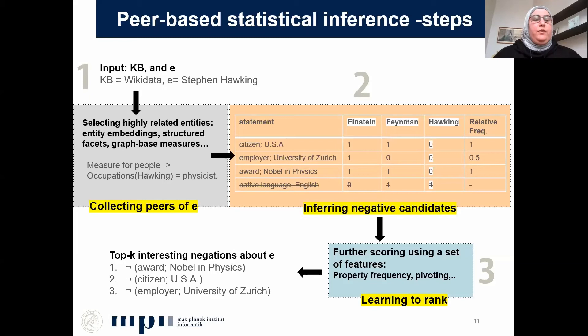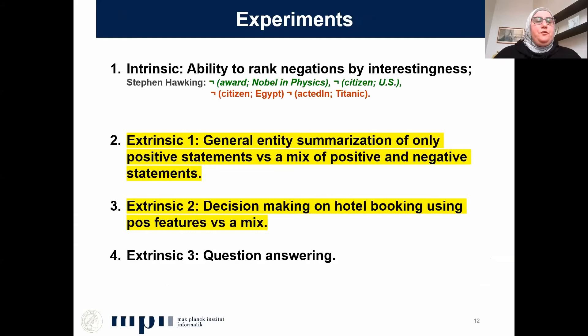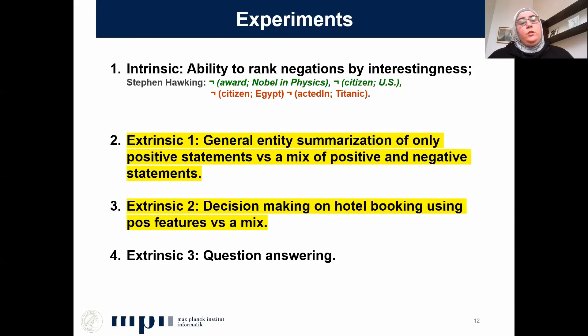We have conducted a number of experiments, but for the sake of time I will mention a few and go into more details on only two of them. Given the high number of candidate negations our method produces, we wanted to assess the quality of our ranking model. In our first extrinsic evaluation, we wanted to show that users in general might be interested in knowing negative information about entities, on top of the traditional positive-only information. Lastly, we conduct a third extrinsic evaluation to show the ability of current structured search engines to answer negative queries.